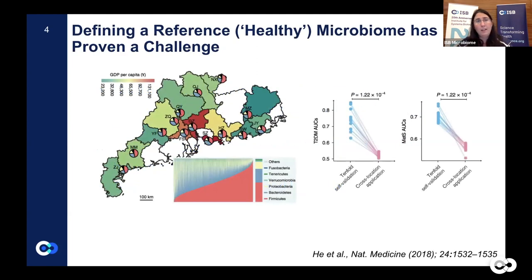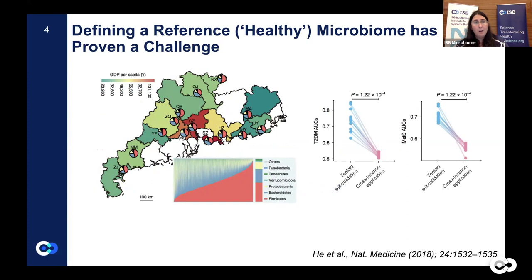We know that the gut microbiome has multiple different biological and metabolic functions, and many of these modulate host health. Over the last decade, gut microbial composition has been linked to a number of human diseases, including gastrointestinal diseases, metabolic diseases, autoimmune diseases, and up to neurodegenerative disorders. There are multiple ways in which the gut microbiome can affect human physiology — for example, through its effect on absorption of nutrients, its involvement in the development of the immune system, and its role in metabolic homeostasis.